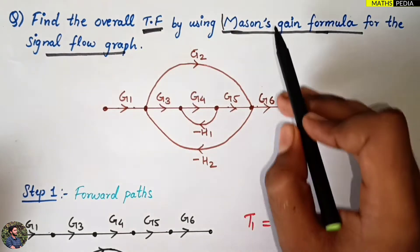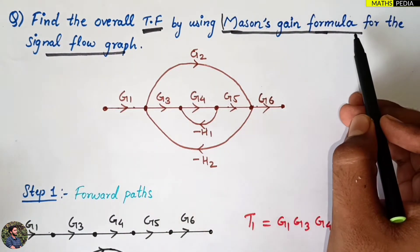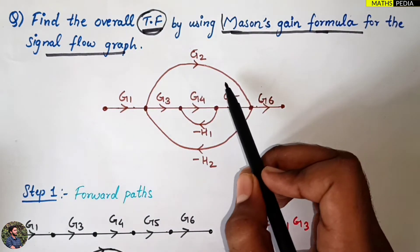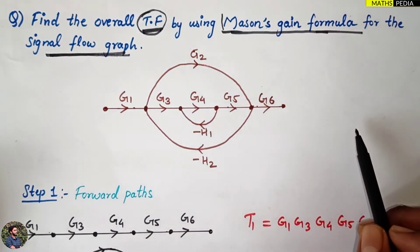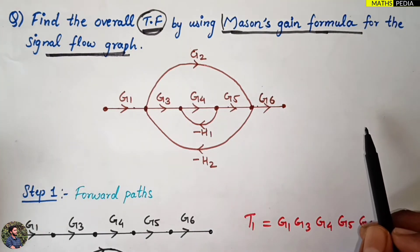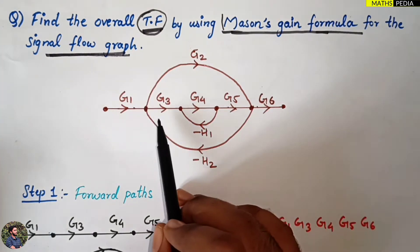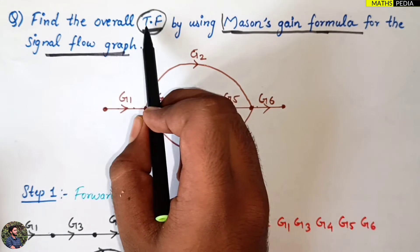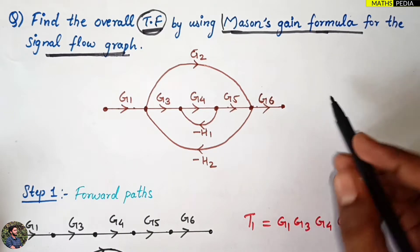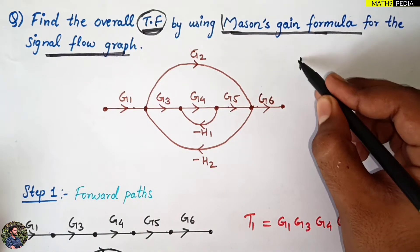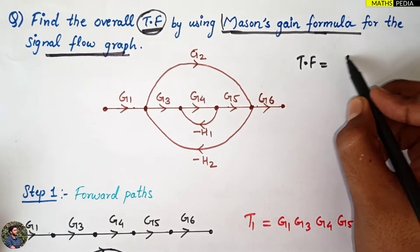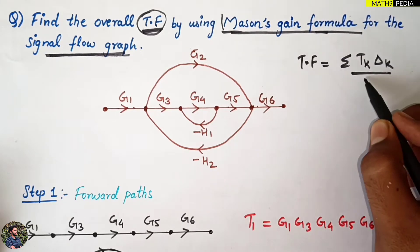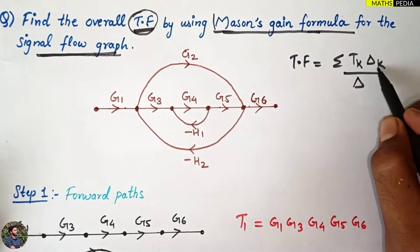In this video we'll be discussing Mason's Gain Formula. We need to understand why we use Mason's Gain Formula to find the transfer function of a given system whenever a signal flow graph is given. You might have studied the block reduction method, but here we use Mason's Gain Formula. The transfer function is equal to the summation of T_k times delta_k divided by delta.